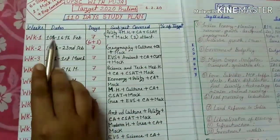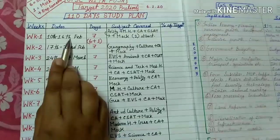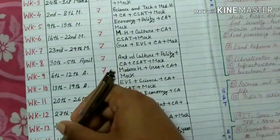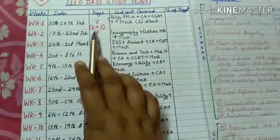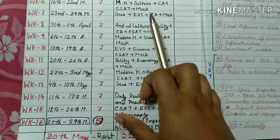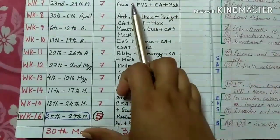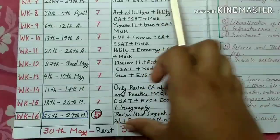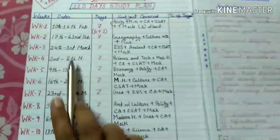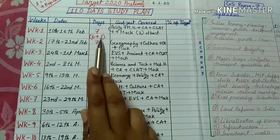The first week starts from 10th of February and ends on 16th February. The days are almost seven days for every week; only the last week is about five days. 30th May is for rest and 31st May is for Prelims. Six days are for study and revision, and one day is for mock test.